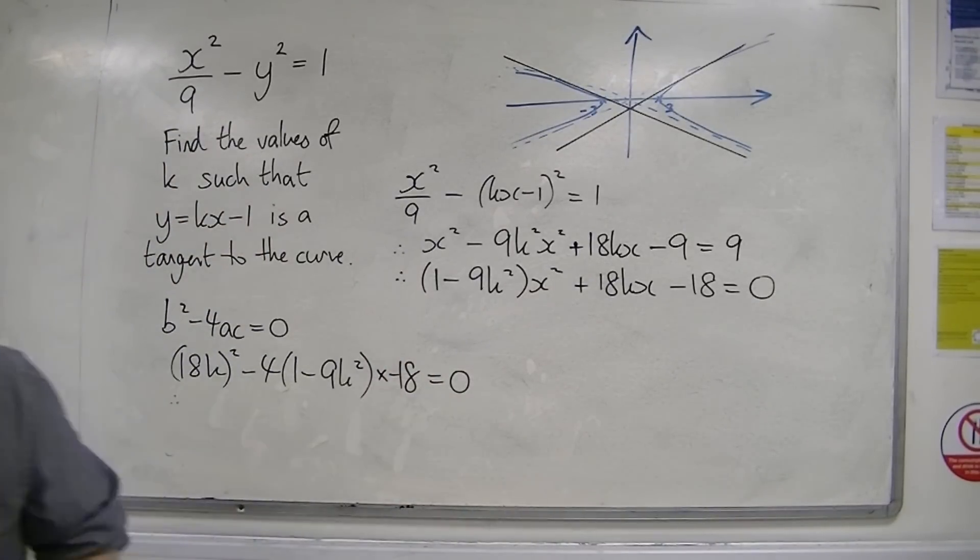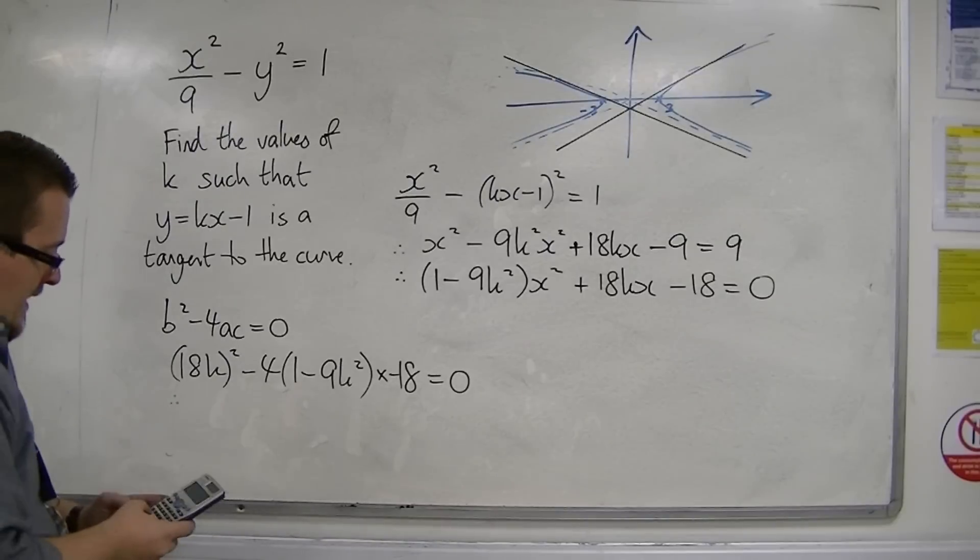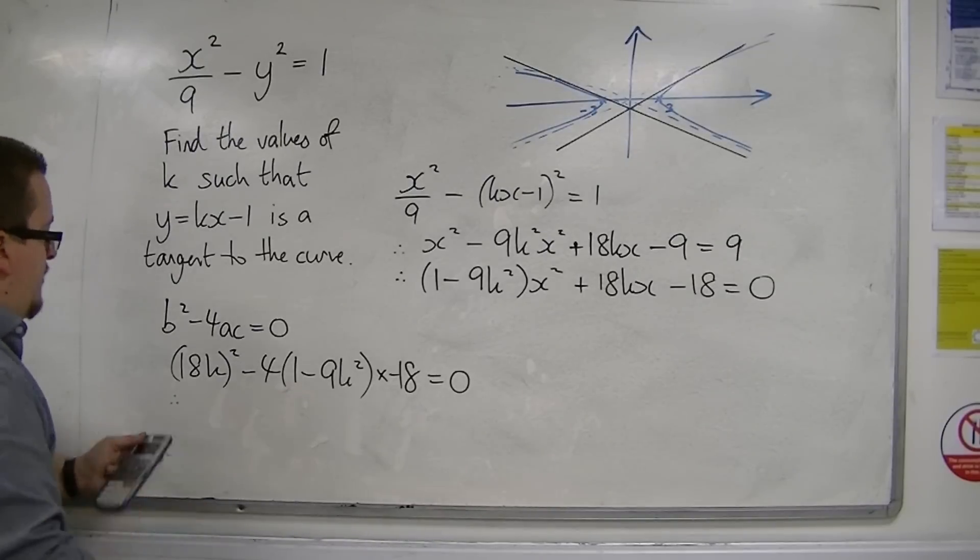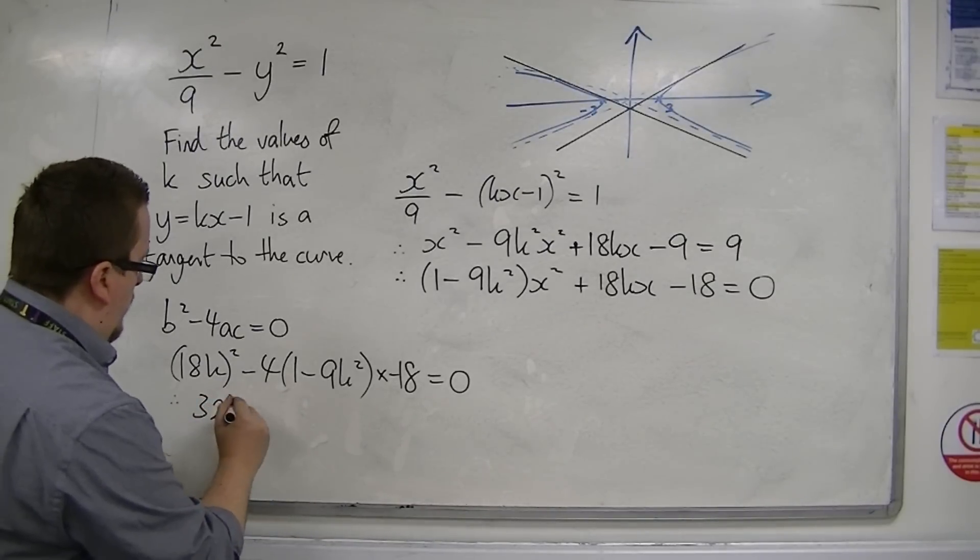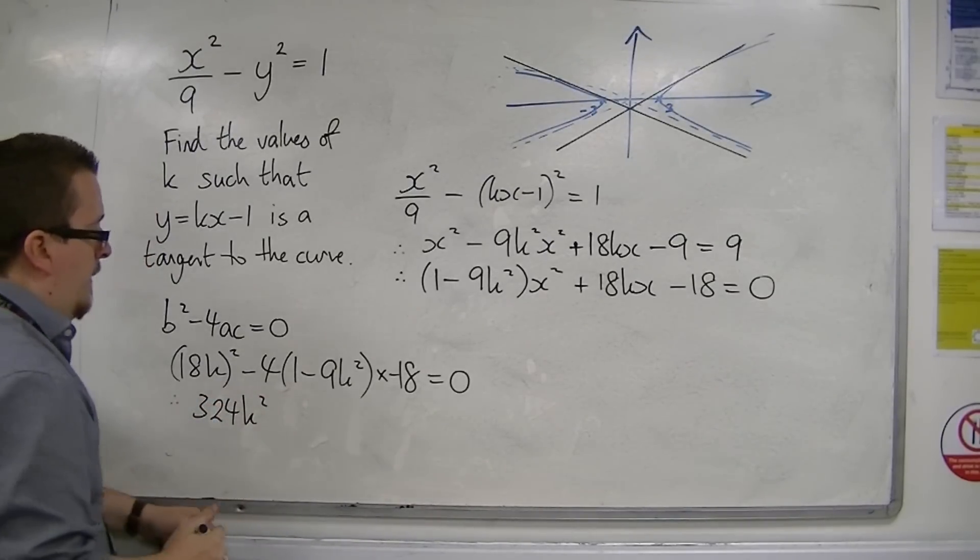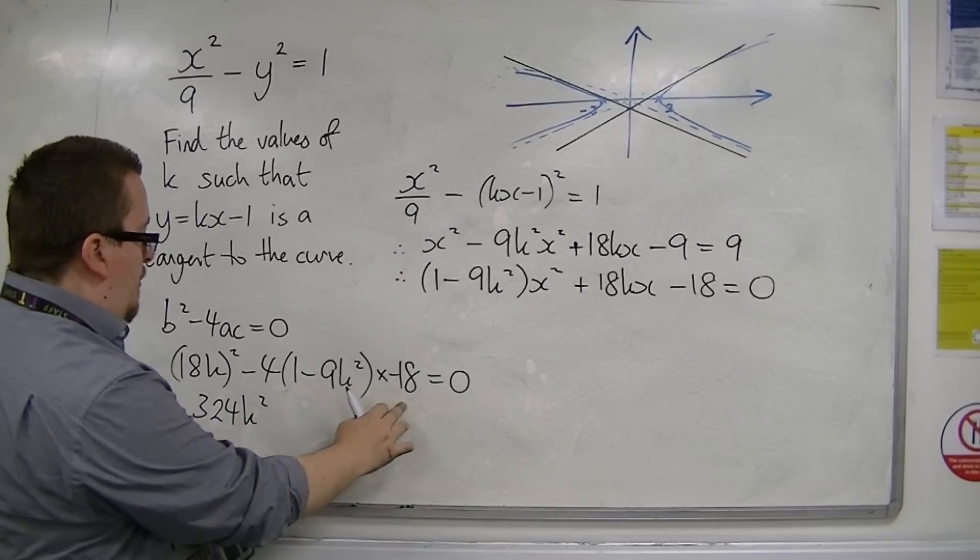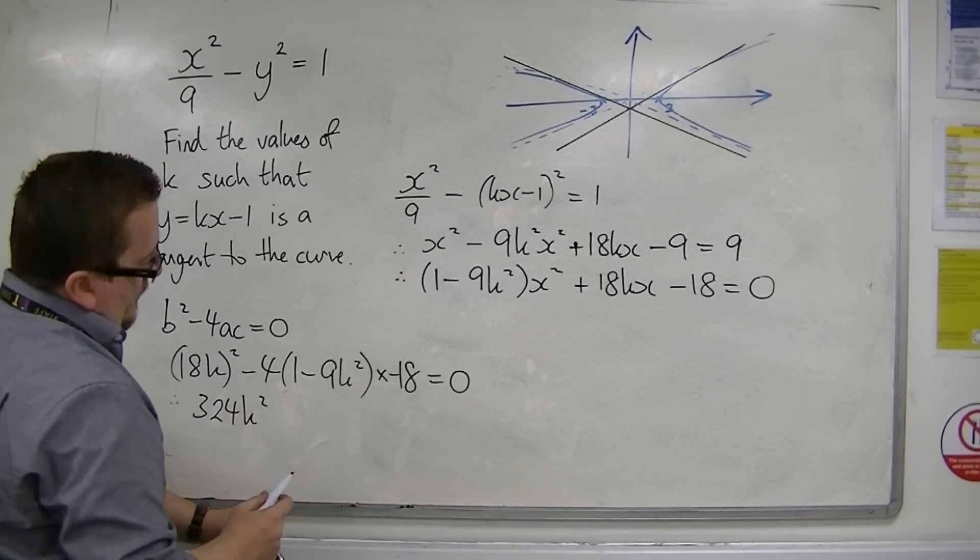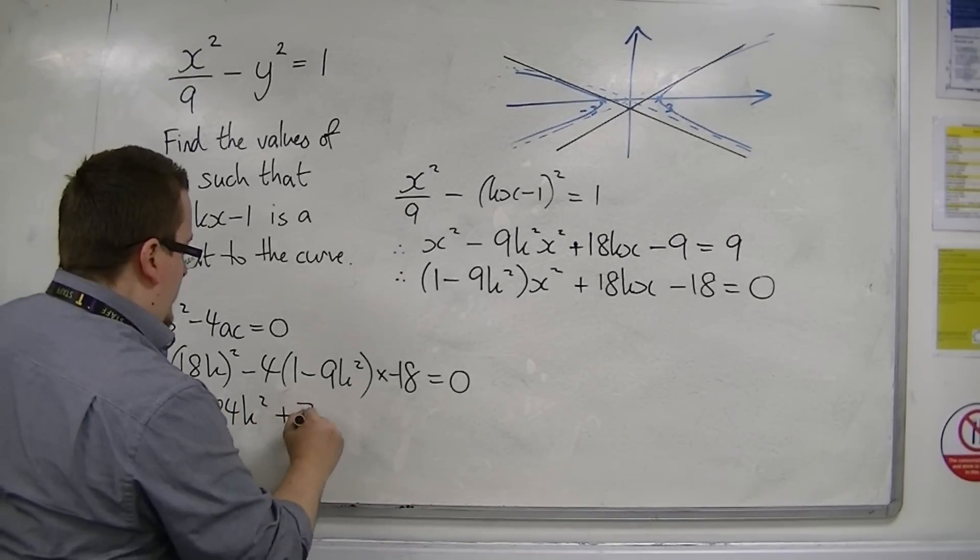So I'm going to want to simplify this. We've got 18 squared is 324, so 324k squared. Then we've got minus 4 times 1 times minus 18, so that's 72. So plus 72.